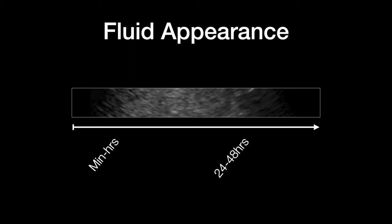Free fluid will be in between different structures in the area of concern — not inside the intestine, not inside the gallbladder, not inside the bladder. That's normal fluid. We're looking for fluid excluded from those places, filling that external container. In the immediate phase, that fluid is fairly anechoic — black. But as that blood settles, coagulates, and becomes a clot in the first minutes to hours, the fluid goes from anechoic to echogenic.